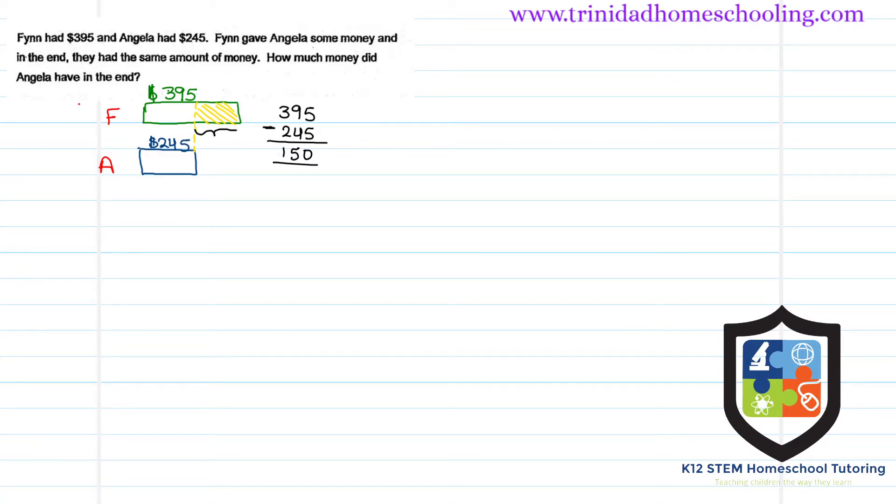Now that you have that extra piece, you want to make sure that you both have the same amount. In order to have the same amount, we do equal sharing. Equal sharing is we take the sum I'll be sharing it equally between the amount of people there are. So in this case we have two persons, Finn and Angela, so we would take that $150 and divide by 2, and we will get $75.